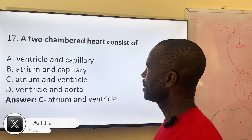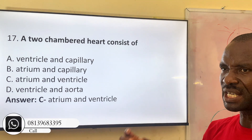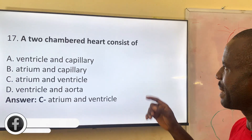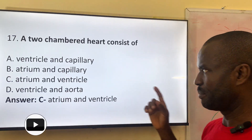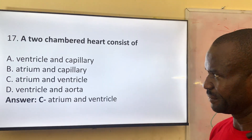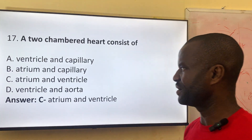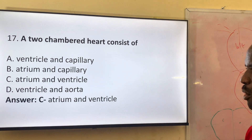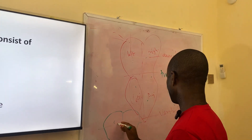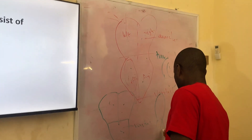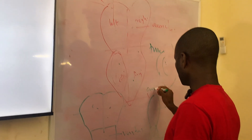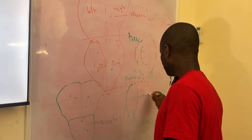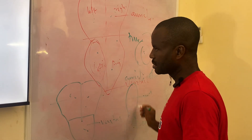Number seventeen: a two-chamber heart. We say organisms can have a one-chamber, two-chamber, three-chamber, or four-chamber heart. A two-chamber heart consists of what? Option A: the ventricle and the capillary. Option B: atrium and capillary. Option C: atrium and ventricle. Option D: ventricle and auricle. The correct answer is atrium and ventricle. For a two-chamber heart, we have one ventricle and one auricle — otherwise known as the atrium. So they are named ventricle and atrium for a two-chamber heart.